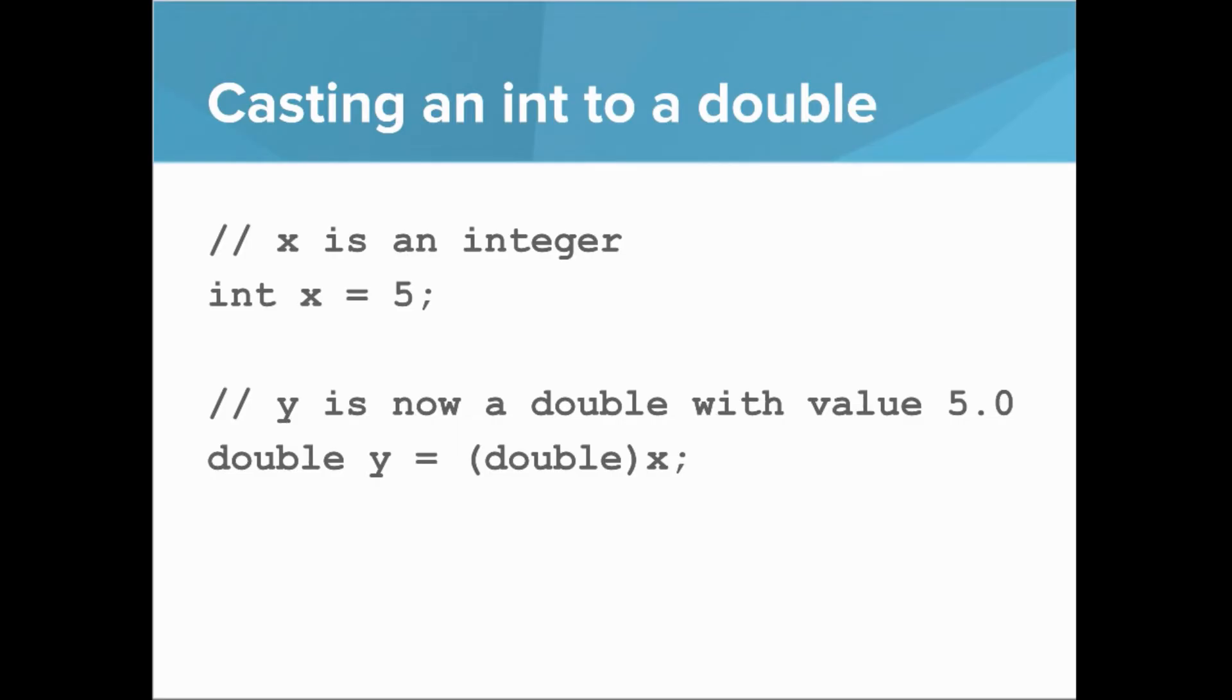To cast an int to a double, let's say you have x as an integer 5 and you want it to be a double, you put double in parentheses before x. And so y is now a double with the value 5.0.